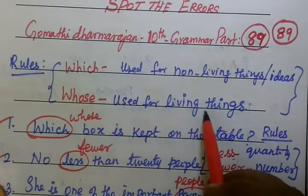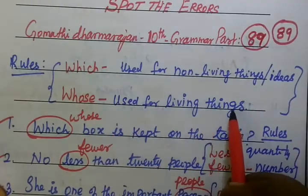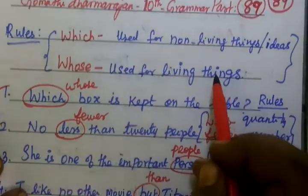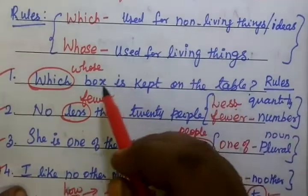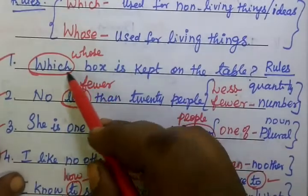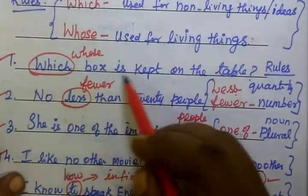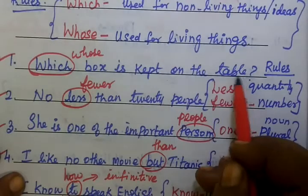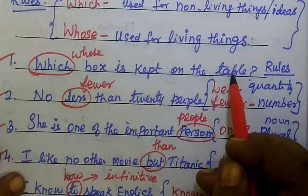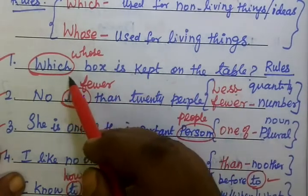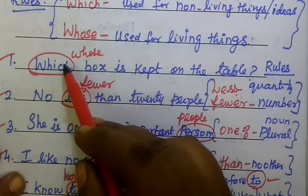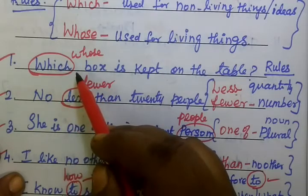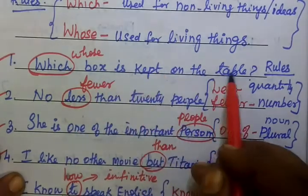Who is used for living things. You see the first example: which box is kept on the table? And whose boxes are kept on the table?